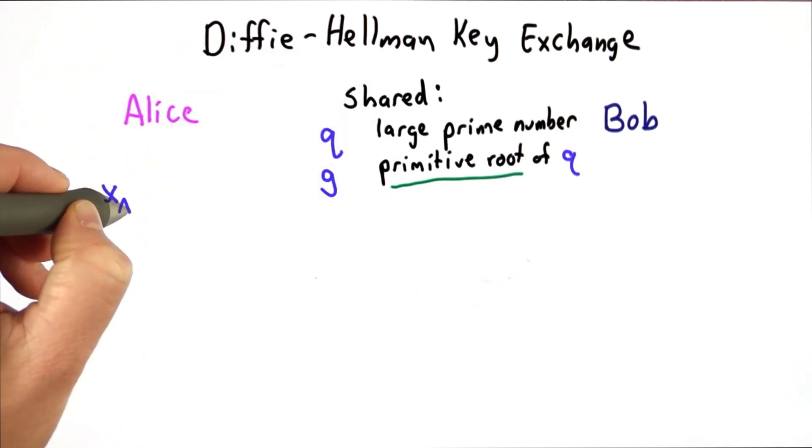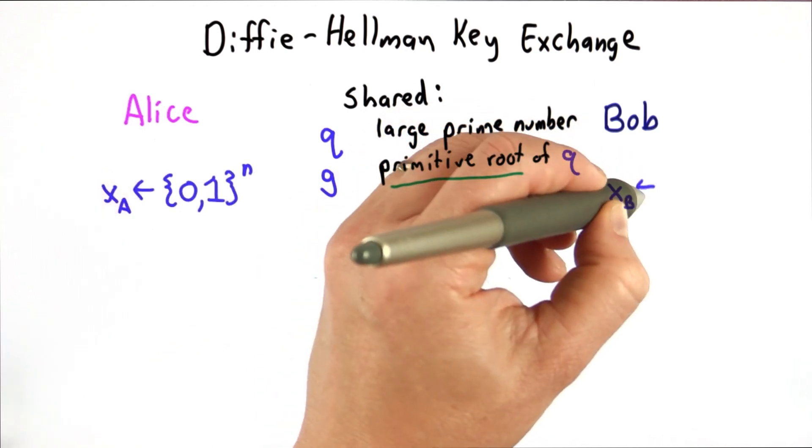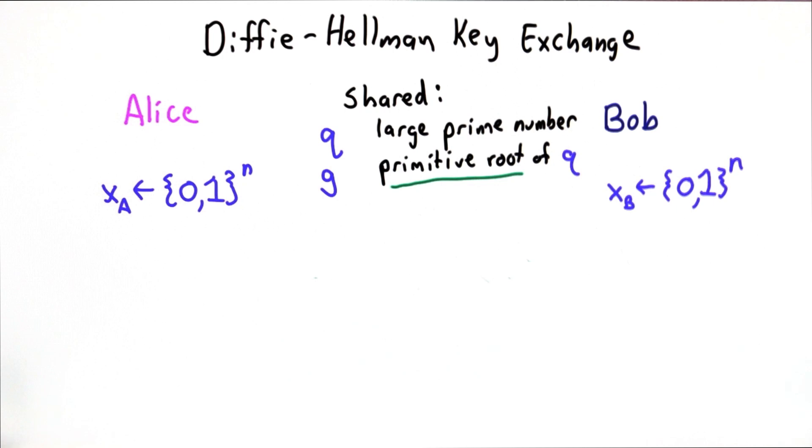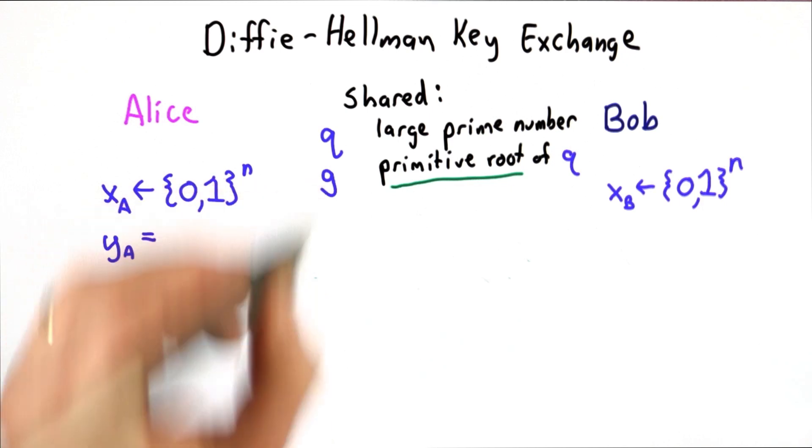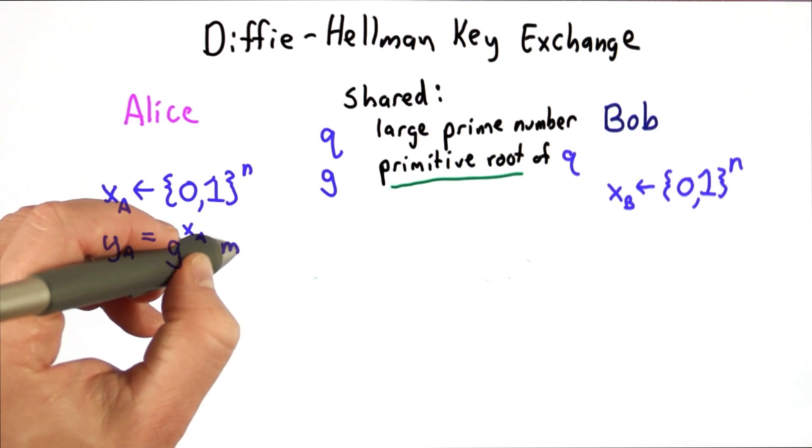Alice will select a large random number, and Bob will also select his own large random number. This is like selecting the secret paint colors. Then Alice will compute a value we'll call ya, and she'll compute that by raising g to the xa power and doing this modulo q.